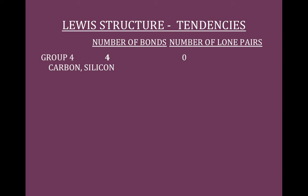If we look at Group 4, which includes carbon and silicon, they will tend to have four bonds in a molecule, and that means they're not going to have any electrons left over as lone pairs around them.